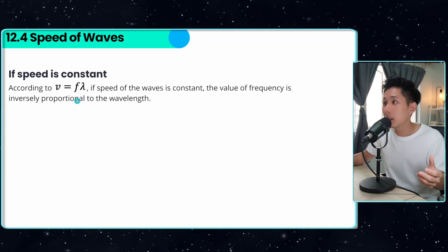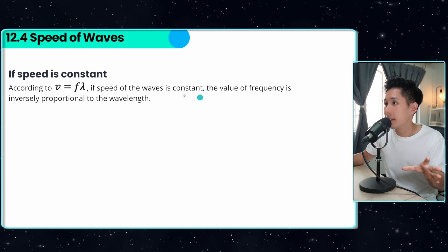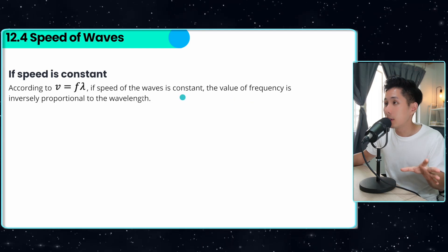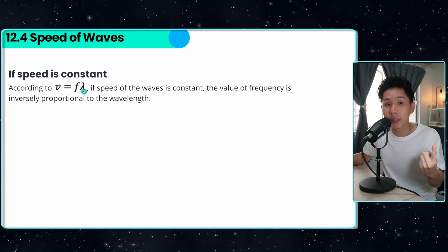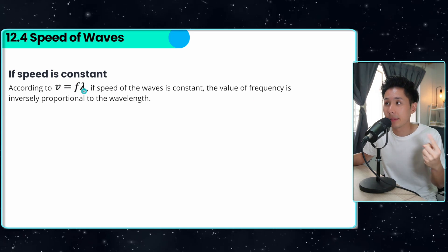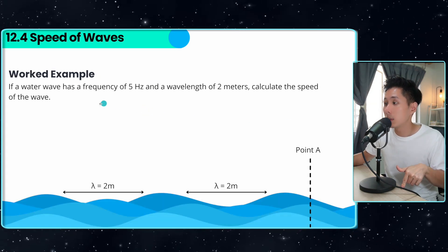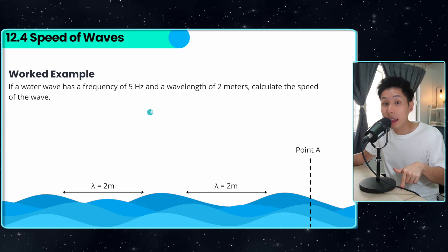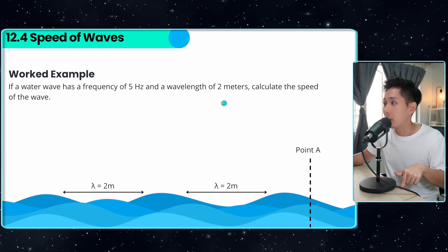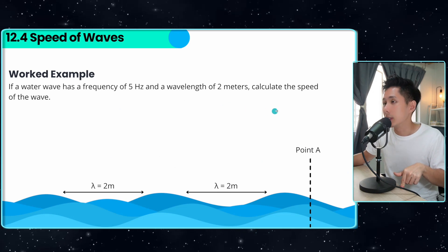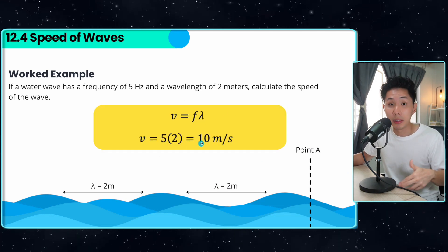According to the wave speed formula, if the speed of the wave is constant, then frequency and wavelength are inversely proportional — if one increases, the other decreases. For example, a water wave has a frequency of 5 hertz and a wavelength of 2 metres. The speed is simply 5 multiplied by 2, which is 10 metres per second.